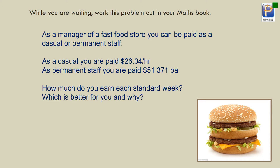So you're manager of a fast food store, you can be permanent or you can be casual. As casual, you're earning a wage, you're only paid for the hours you show up and you're getting that much per hour. If you're a permanent staff, you're going to get this salary for the whole year. So how much do you work each standard week? As we said last lesson, standard week's 38 hours.